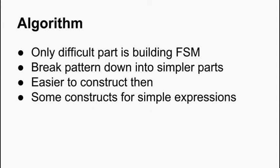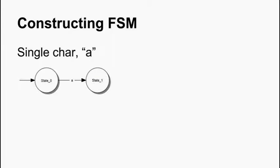And as I said before, the difficult part is building the machine. But it is a lot easier if you break it down into simpler parts instead of trying to do the whole pattern at once. So, start off with constructs for simple expressions. Obviously the most simplest, just a single character. It is fairly obvious, you just have a single transition to a new state.